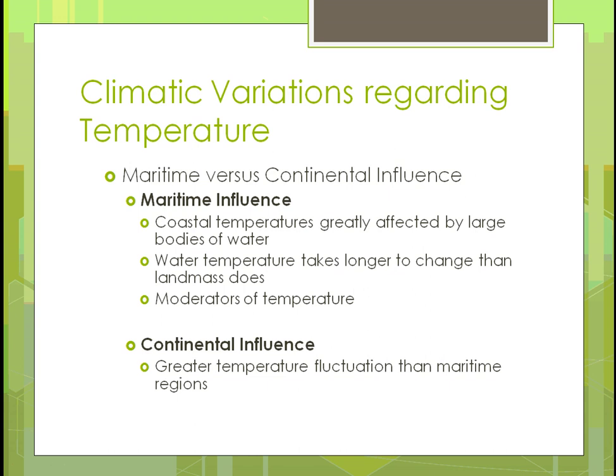Maritime versus continental: coastal temperatures are greatly affected by large bodies of water. Water temperature takes longer to change than land mass — soil warms up quicker than water. Maritime areas act as a temperature moderator, so you don't get temperature extremes. A good example is Chicago: in summer, the farther you go from Lake Michigan, the warmer it gets, because the lake winds cool the area nearby. With a continental influence, you get greater temperature fluctuation — warmer summers and colder winters away from large bodies of water.